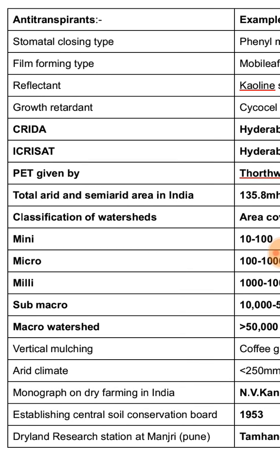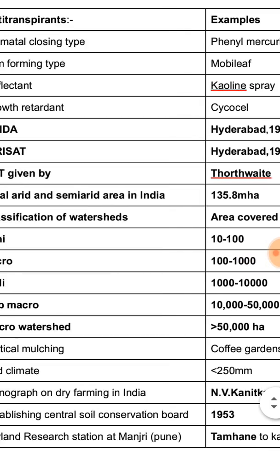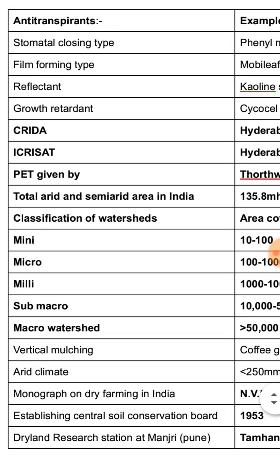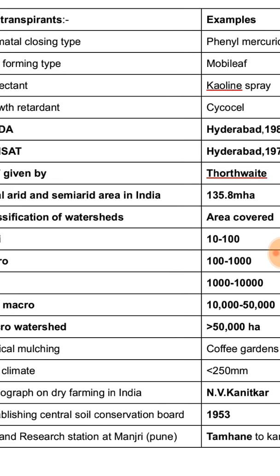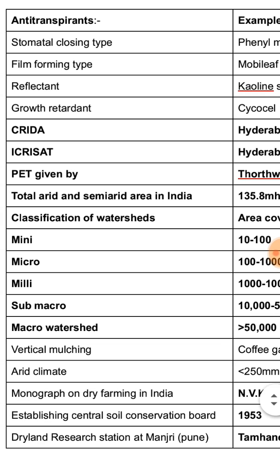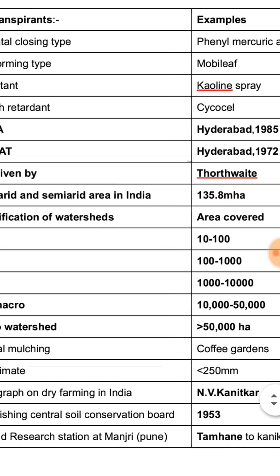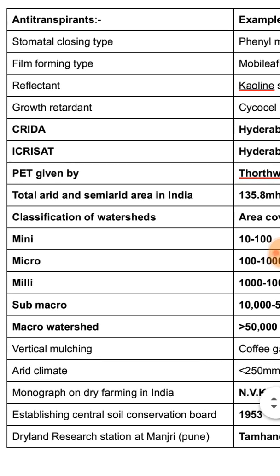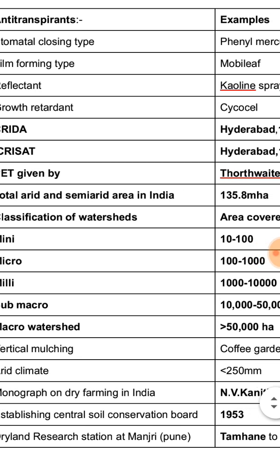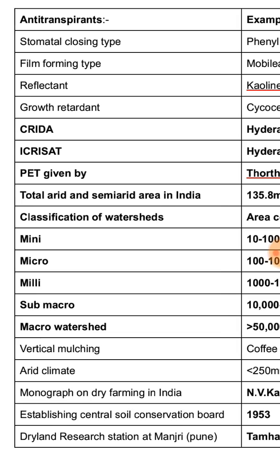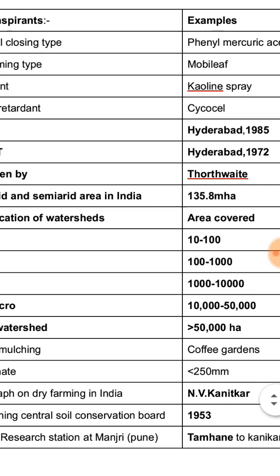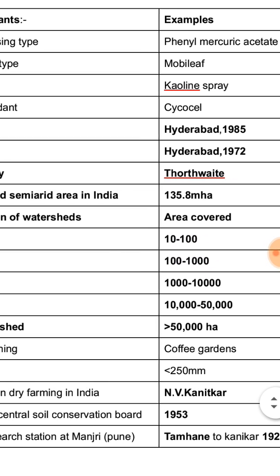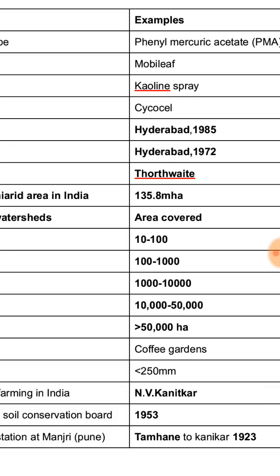Vertical mulching is mostly followed in coffee gardens. Arid climate includes areas with less than 250 mm of rainfall. Monograph on dry farming in India: the Central Soil Conservation Board was established in 1953. The dryland research station at Manjari, Pune was established in 1923.